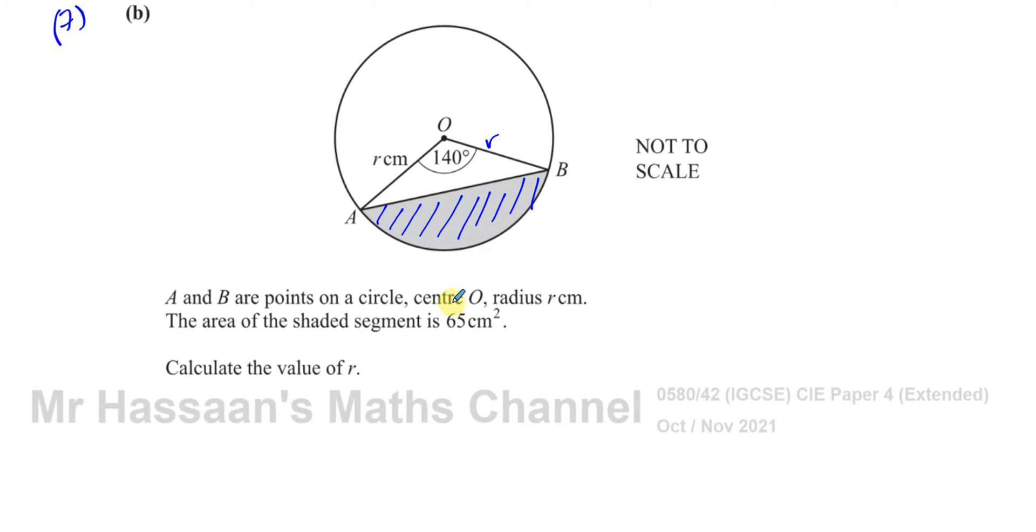That's how you find the area of a segment. So the area that we got is the result of the area of the sector take away the area of this triangle. If we use that, we can then find what r is.